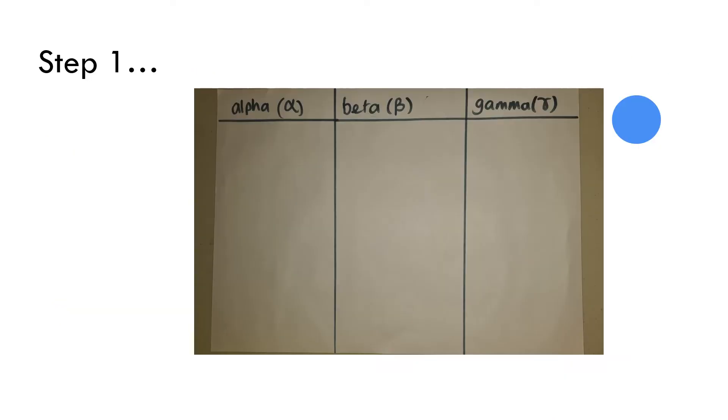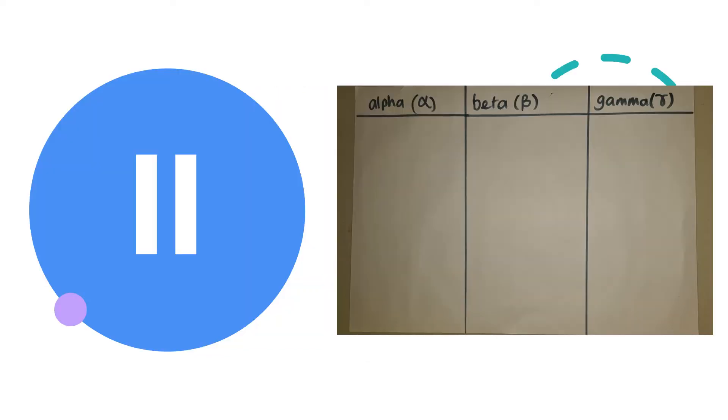Step 1. Divide the A3 sheet into three columns and label them with the headings alpha, beta and gamma. Press the pause button now to complete this.